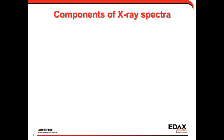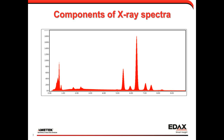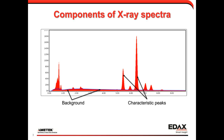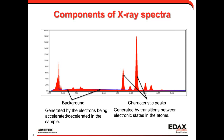An x-ray spectrum has two primary components: the background and the characteristic peaks. The background comes from electrons being accelerated or decelerated inside the sample — a continuum emission of radiation. The characteristic peaks are generated by transitions between electronic states in atoms. The characteristic peaks are what we use to determine what and how much is in the sample, while the background is sometimes considered an annoyance, but as we'll show, there's useful information hidden in it as well.